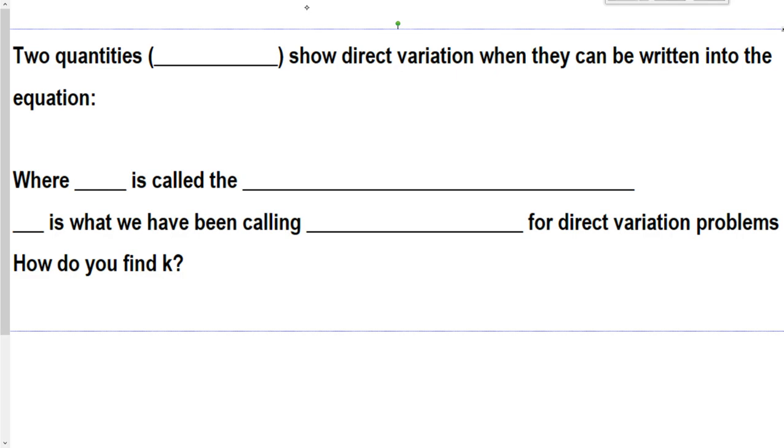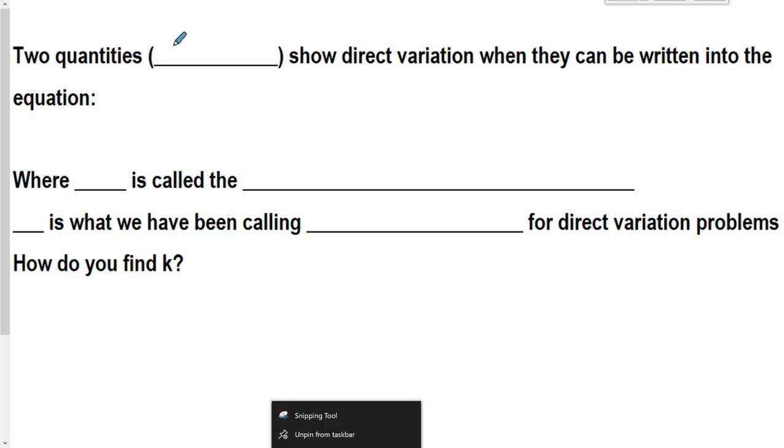First thing though, we need to do here is we are going to actually talk about what does direct variation mean. So direct variation, it's two quantities, x and y.